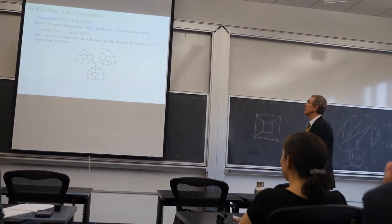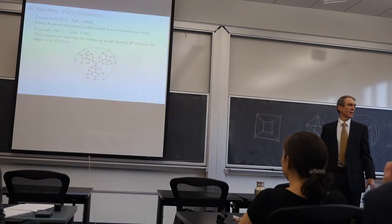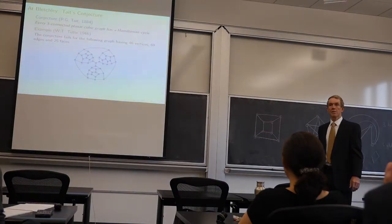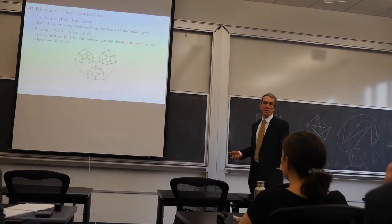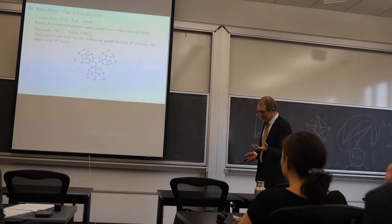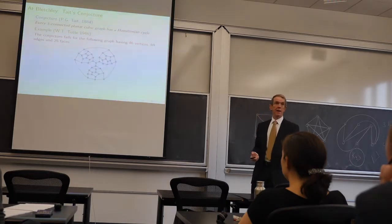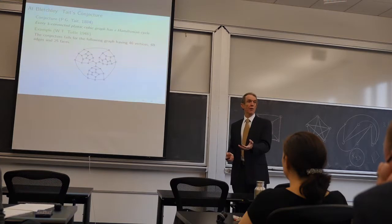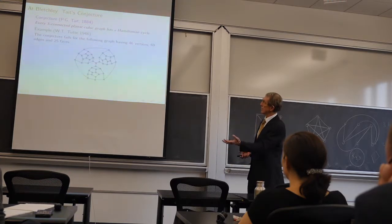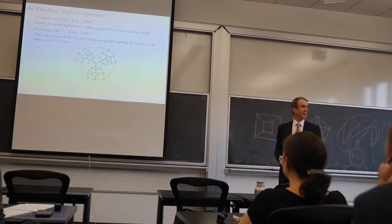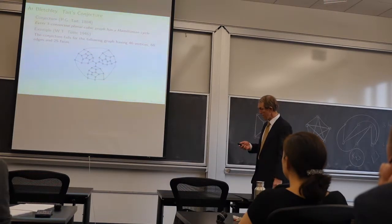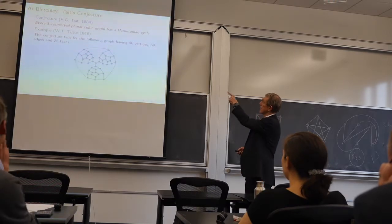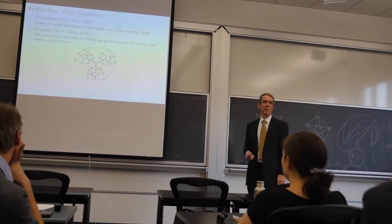He was doing this work in the evening at Bletchley Park but he wasn't solving the Lorenz code. This is an example they constructed by hand. They actually had computers at Bletchley Park that they used to solve the Lorenz code. This is an example. It's a cubic three-connected planar graph. It doesn't have a Hamiltonian cycle.